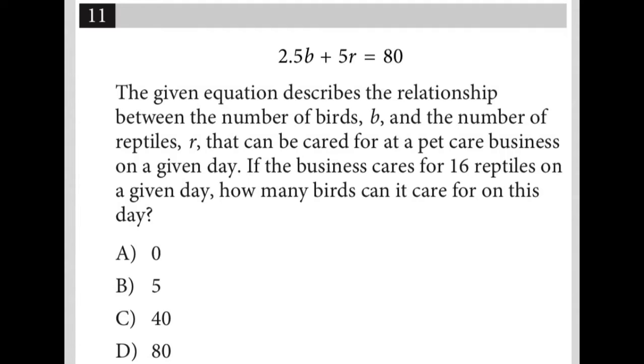This question starts off by providing us with this equation: 2.5b plus 5r equals 80. The given equation describes the relationship between the number of birds, b, and the number of reptiles, r, that can be cared for at a pet care business on a given day.